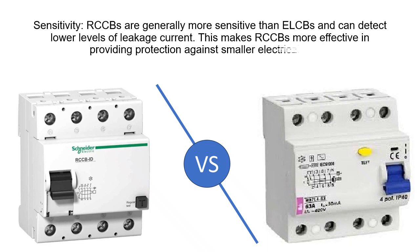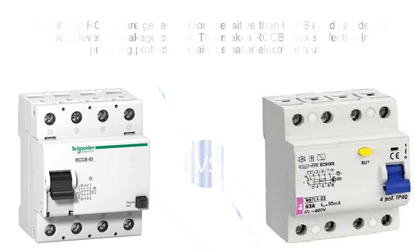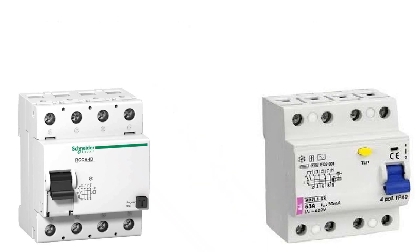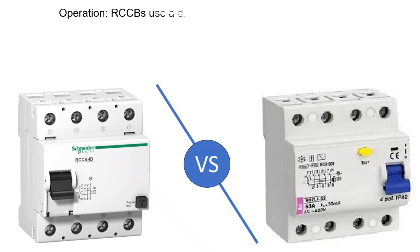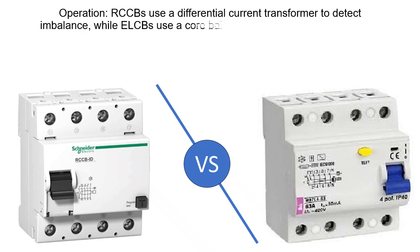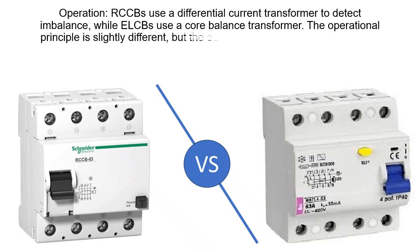Operation: RCCBs use a differential current transformer to detect imbalance, while ELCBs use a core-balanced transformer. The operational principle is slightly different, but the outcome is the same — disconnecting the circuit when leakage is detected.